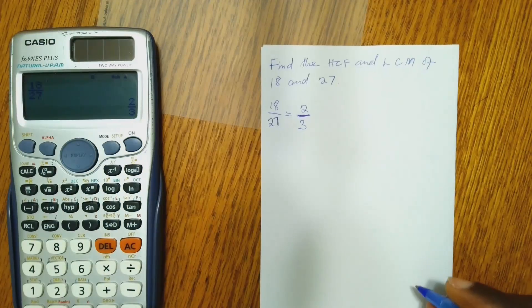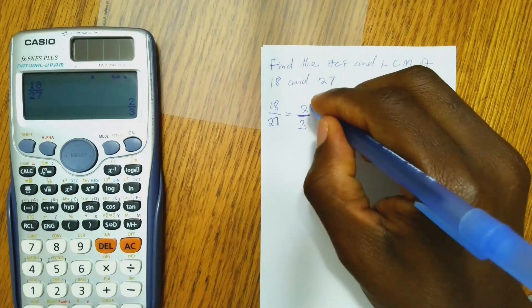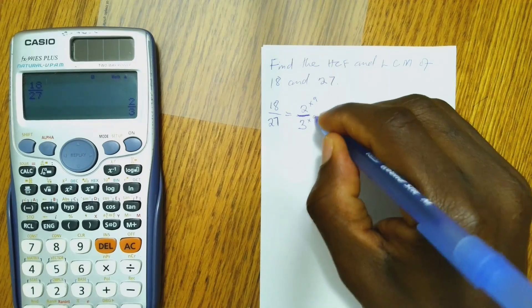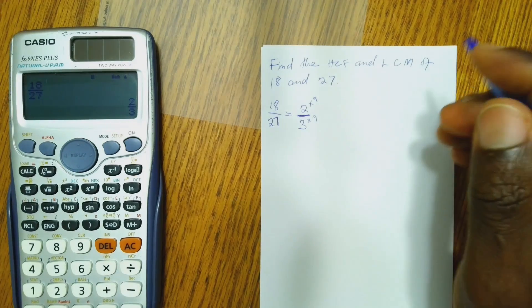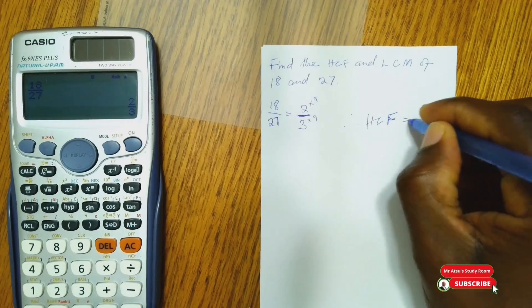So now you ask yourself, two times what number will give you 18? That is 9. And then 3 times what number will give you 27? Also 9. So it means that our HCF is 9.